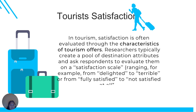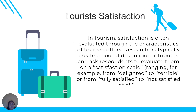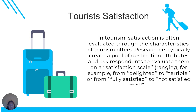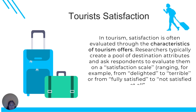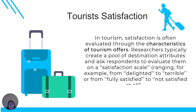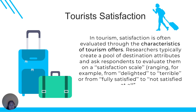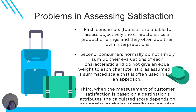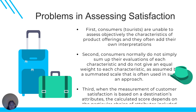We also have tourist satisfaction. Once your tourist is satisfied, you have different characteristics of the offerings. The main objective is to satisfy your tourists using a satisfaction scale ranging from delighted to terrible — fully satisfied or not satisfied at all. You should have a scale wherein you can measure the satisfaction of the tourist. The first problem in assessing satisfaction is that tourists are unable to assess objectively the characteristics of the product offering and often add their own interpretation — making it very subjective.